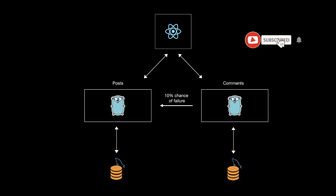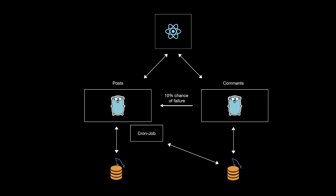In this video, we will continue the series of Golang microservices by adding a cron job in the background to synchronize the databases. In the previous video, we added a 10% chance of failure from the comments microservice to the post microservice, and this will cause some missing information between the two databases. Now in this video, we will add an infinite loop that will run asynchronously to synchronize both databases. So let's see how to do it.